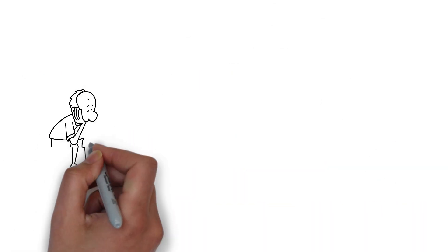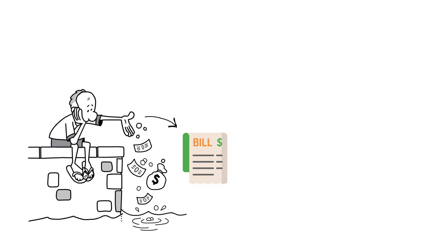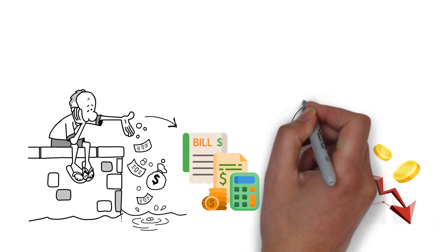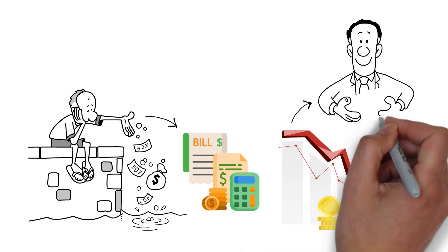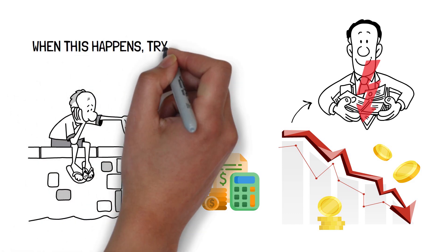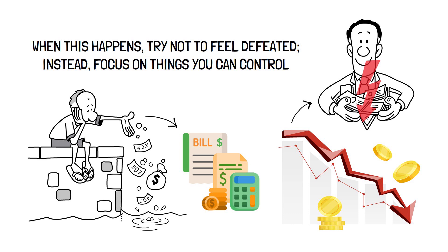There will be moments when you feel like you're going backward, which is usual when unforeseen charges come and you're forced to face a major expense. When the stock market or real estate market perform poorly, your net worth will most likely decrease. When this happens, try not to feel defeated. Instead, focus on things you can control.